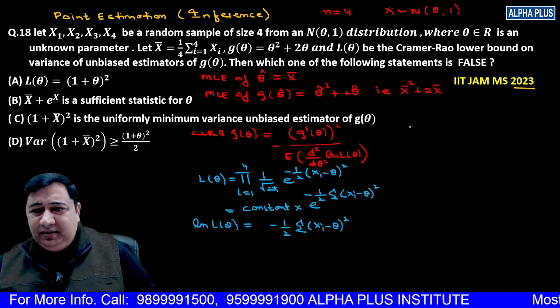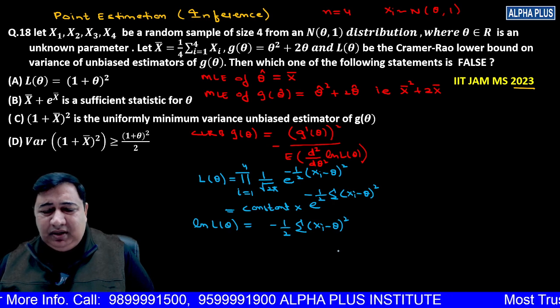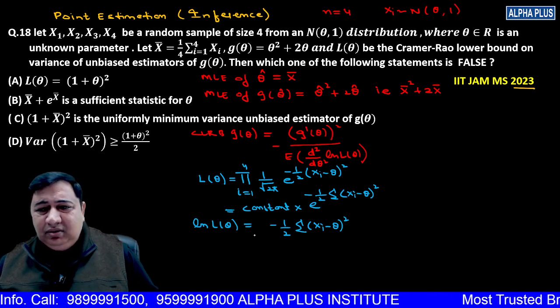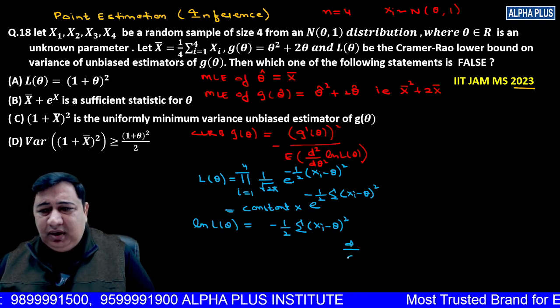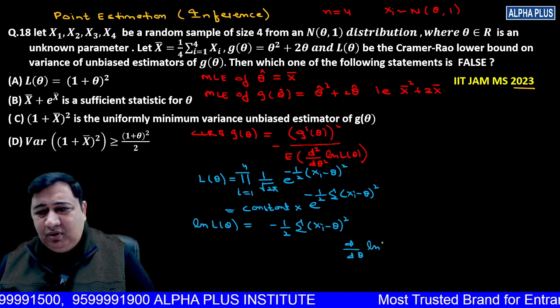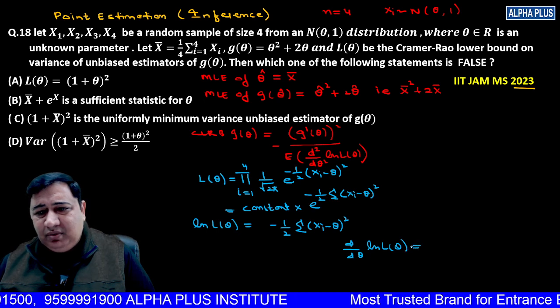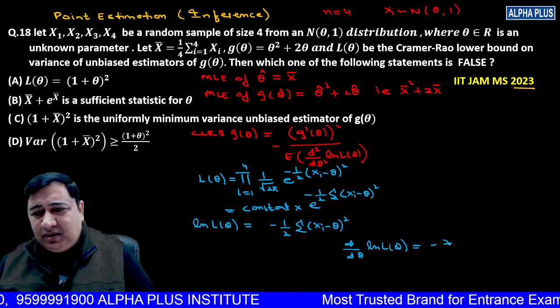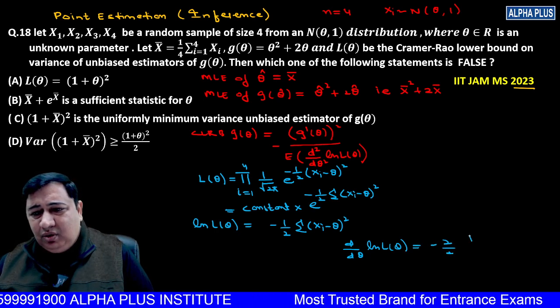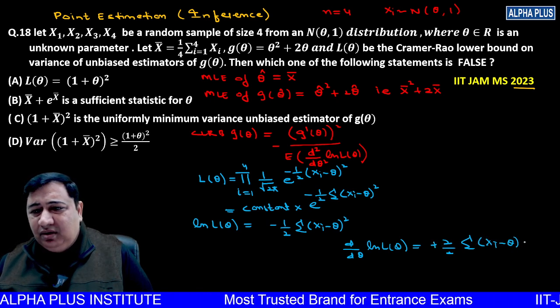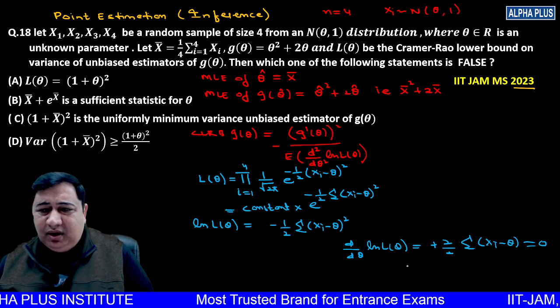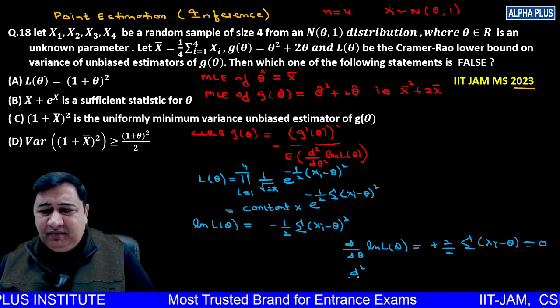Now let's take the derivative. d by d theta of log likelihood equals minus becomes plus, 2 cancels, and we get summation (Xi minus theta) times minus 1, which equals zero.